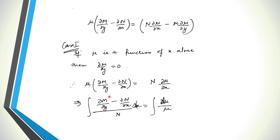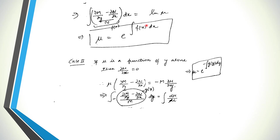The condition is that the inside factor must be a function of x alone; only then can we integrate with respect to x. Call it f(x). Then integrating gives ln(mu) = integral of f(x) dx, so mu equals e to the power of the integral of f(x) dx, where f(x) is (∂M/∂y − ∂N/∂x) divided by N. Whenever this expression is a function of x alone, the integrating factor is e to the power of the integral of f(x) dx.